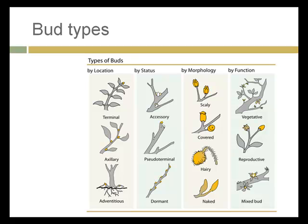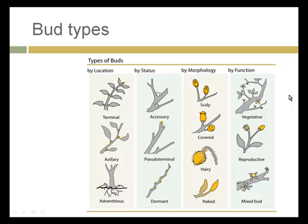Buds can be scaly with many scales, covered with tissue, hairy, or naked. Most importantly, buds can be vegetative — sprouting to form leaves — or reproductive, sprouting to form flowers. Or they can be mixed, containing multiple structures within the bud ready to grow into both reproductive and vegetative parts.